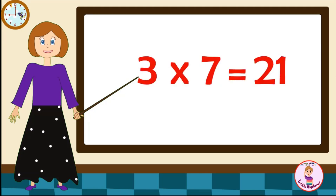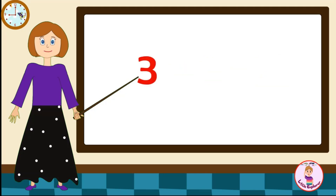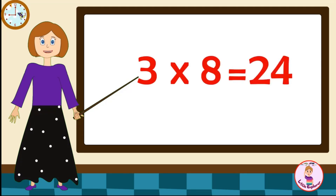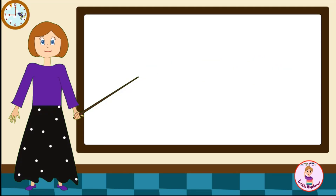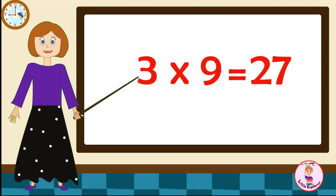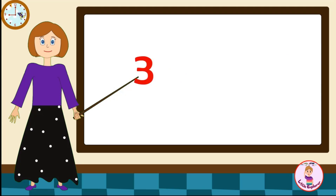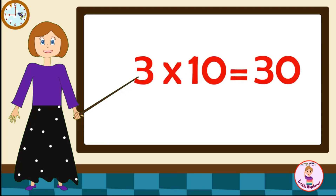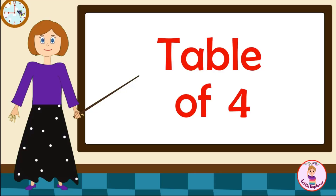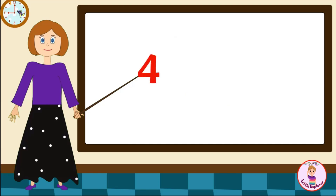Three-seven's are twenty-one. Three-eight's are twenty-four. Three-nine's are twenty-seven. Three-ten's are thirty. Table of Four. Four-one's are four.